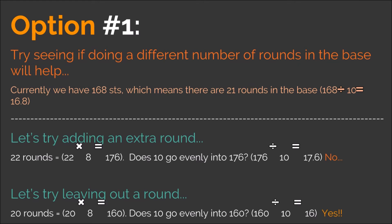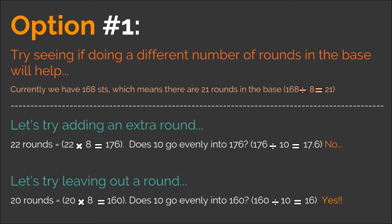The first option is to see if doing a different number of rounds in the base will help you get a perfect match with your abbreviated graph. As a reminder, in our scenario we currently have 168 stitches in the last round of the base, which means there are 21 rounds in the base — because 168 divided by 8 equals 21. Our abbreviated graph has 10 stitches, and when you divide 168 by 10 you get 16.8, which is not an even number, meaning that abbreviated graph does not fit perfectly onto that base. So we currently have 21 rounds — let's try adding an extra round. If we have 22 rounds and multiply that by 8, we get 176 stitches in the 22nd round.